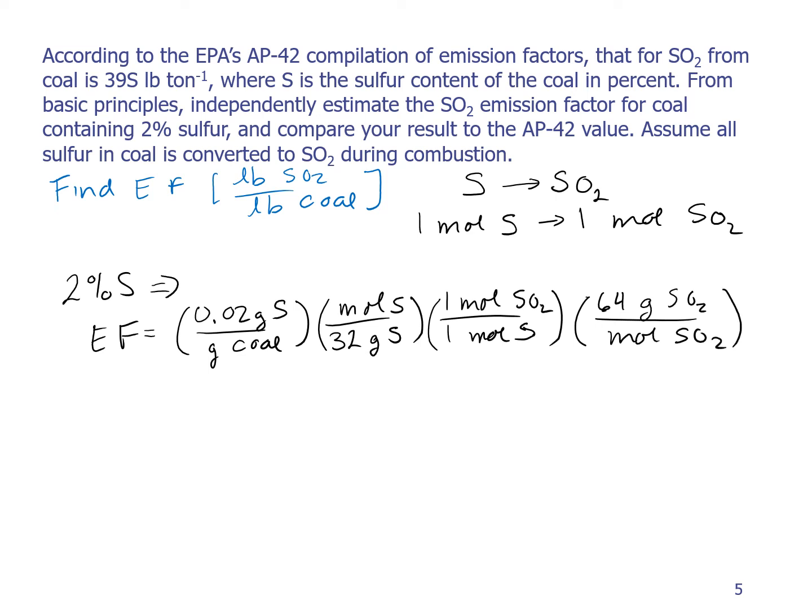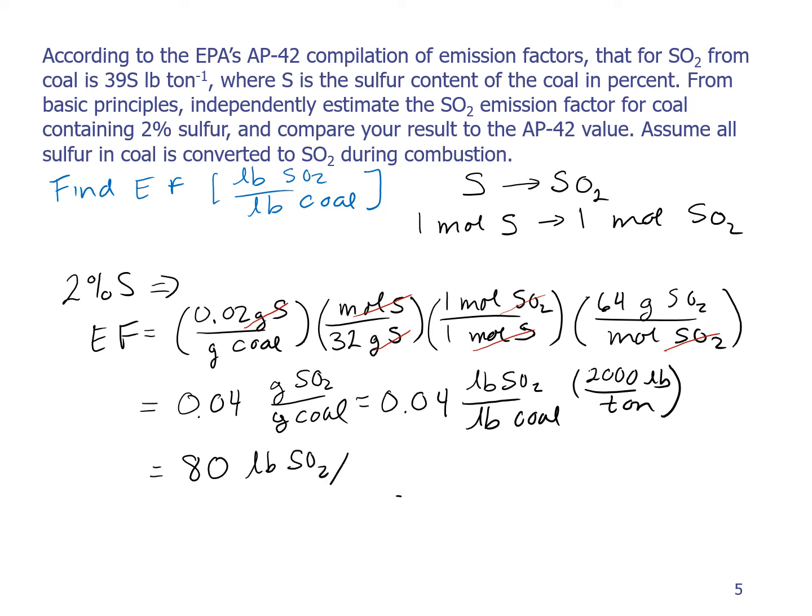Notice that my units here cancel. I go from grams of sulfur to moles of sulfur to moles of SO2, and finally I end up with grams of SO2. And so this gives me 0.04 grams of SO2 per gram of coal. Now the emission factor in AP-42 is actually pounds per ton. So this is grams per gram, so it's going to be the same as pounds per pound. So this is 0.04 pounds of SO2 per pound of coal. Now I can use a conversion factor to get from pounds to tons. So I want to multiply by 2,000 pounds per ton. That's for the coal. And I get 80 pounds of SO2 per ton of coal.